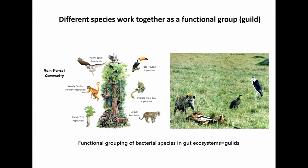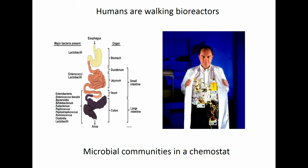We also know that in macroecosystems, species are not independent from each other. Different species form different functional groups, which can be called guilds, and the members of each guild increase or decrease together — they thrive or decline together. So we would like to know if in a gut microbial ecosystem, different bacterial populations or species form different functional groups or guilds. These are the ecological questions that we would like to ask.